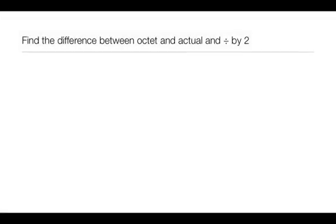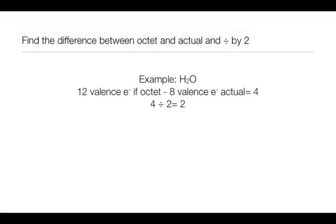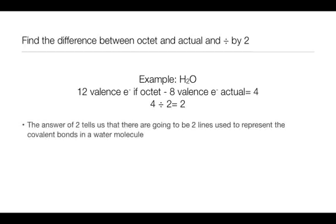We then look at the difference between these two and divide by two. So we had 12 valence electrons if everything had an octet, minus eight valence electrons that they actually have, to give us four. That value of four is then divided by two. This tells us how many lines we're going to use in our Lewis structure. Each line represents two electrons that are being shared between the atoms.